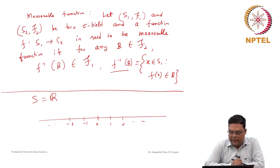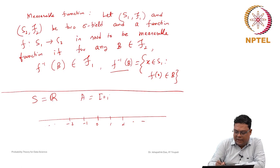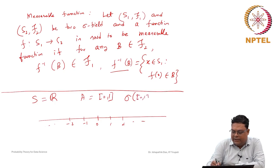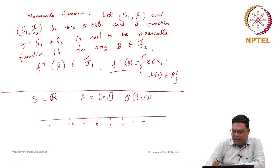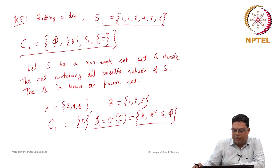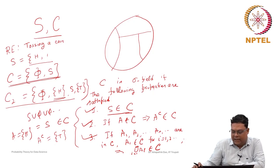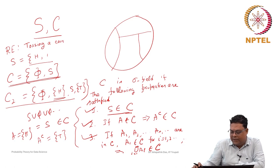Now, within this real number system we want to take some subset. Suppose A is the interval [0,1]. What is the sigma field generated by A? We need to satisfy three properties: S has to be in the collection of subsets; if any element is in set C, then its complement also has to be part of C; and any countable infinite union of sets A_i also has to be in C.